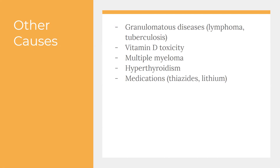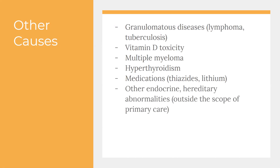Medications: thiazides and lithium are the most common medication causes. There are a couple of rare ones — Forteo, the injectable osteoporosis medication, is one. For uncommon medications, double-check the side effects. There are also other endocrine and hereditary abnormalities, but these are outside the scope of primary care. If you've done your workup and you're getting to that point, they're going to an endocrinologist — you've done your job as the PCP.